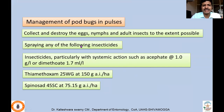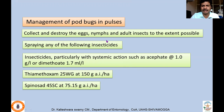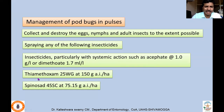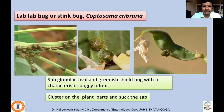For managing pod bugs in pulses, collect and destroy the egg masses, which are generally laid in masses of 10 to 15. Nymphs and adults can be collected or swept with the help of an insect net and destroyed. Spraying any systemic insecticide — such as dimethoate, thiamethoxam, or spinosad — at the suggested concentration and dosage is recommended.